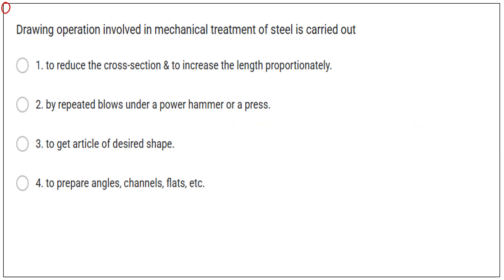Then question number 12. Drawing operations involved in mechanical treatment of steel is carried out. There are different operations in case of mechanical treatment of steel. There are forging, then pressing and rolling. So these are the different operations. Drawing is also one of the operations. In case of drawing, this drawing is used to reduce the cross section and increase the length. So here the first option is correct.